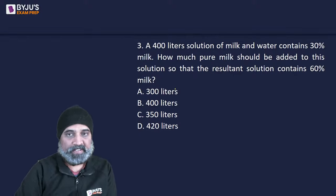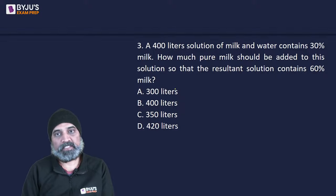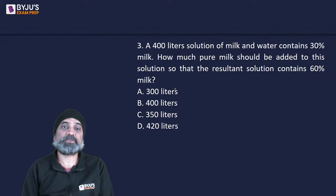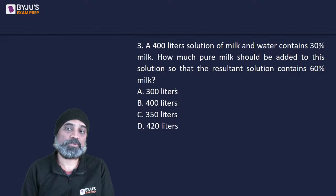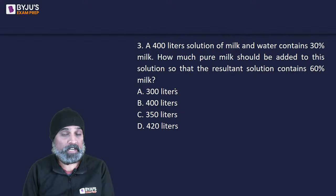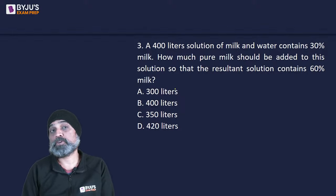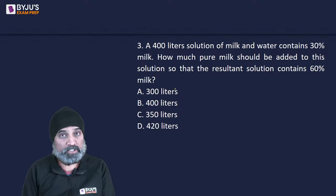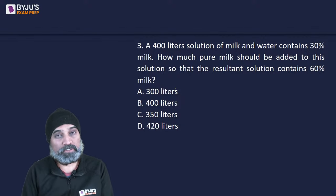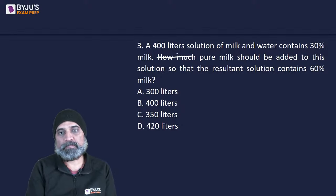Next question: a 400-liter solution of milk and water contains 30% milk. How much pure milk should be added so that the resultant solution contains 60% milk? This question can be solved in at least 3 to 4 different ways — using percentages, averages, allegation, or ratios. Let's say x liters of pure milk is added.